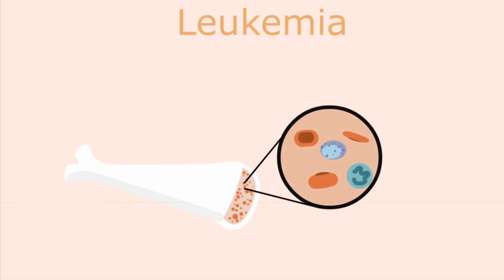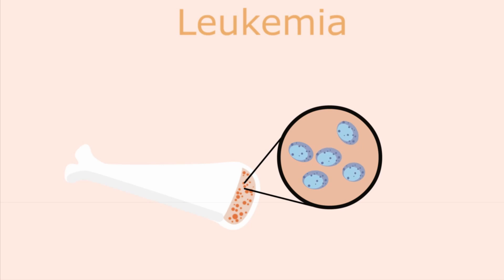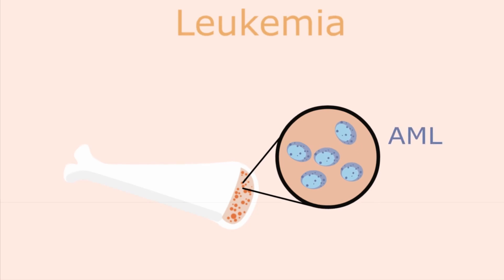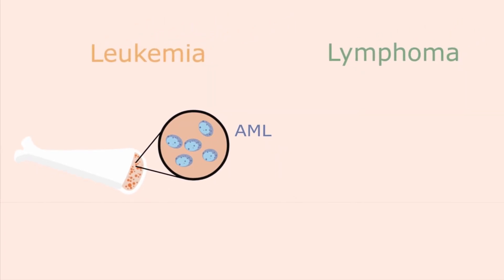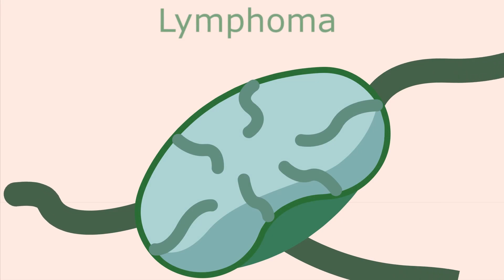In leukemia, the cancer starts in the blood-forming tissues such as the bone marrow, and we can see a clonal expansion of white blood cells. In this example we see an acute myeloid leukemia. When we compare this to lymphoma, we have a cancer that begins in the lymphatic system, but these are white blood cells that have left the bone marrow.